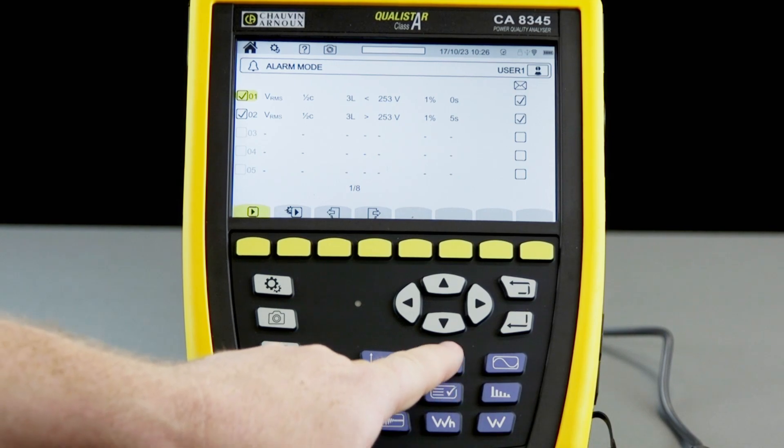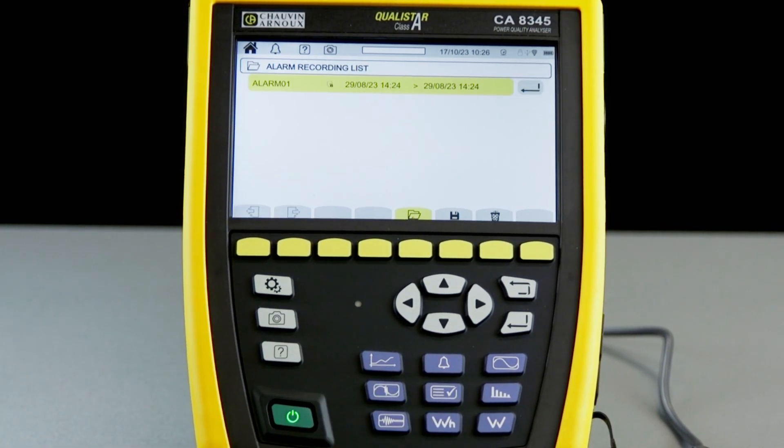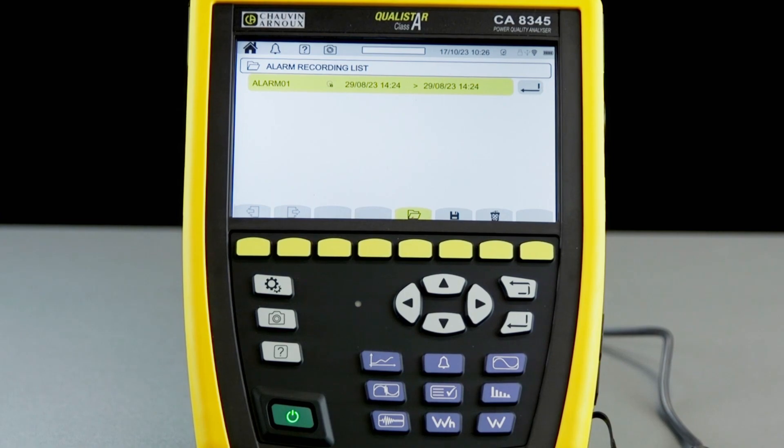Once we've set up the parameters, we go to the bell icon, which allows us to configure an alarm recording session. If you've done any previous alarm recordings, they'll be listed here and you can view those within the menu.